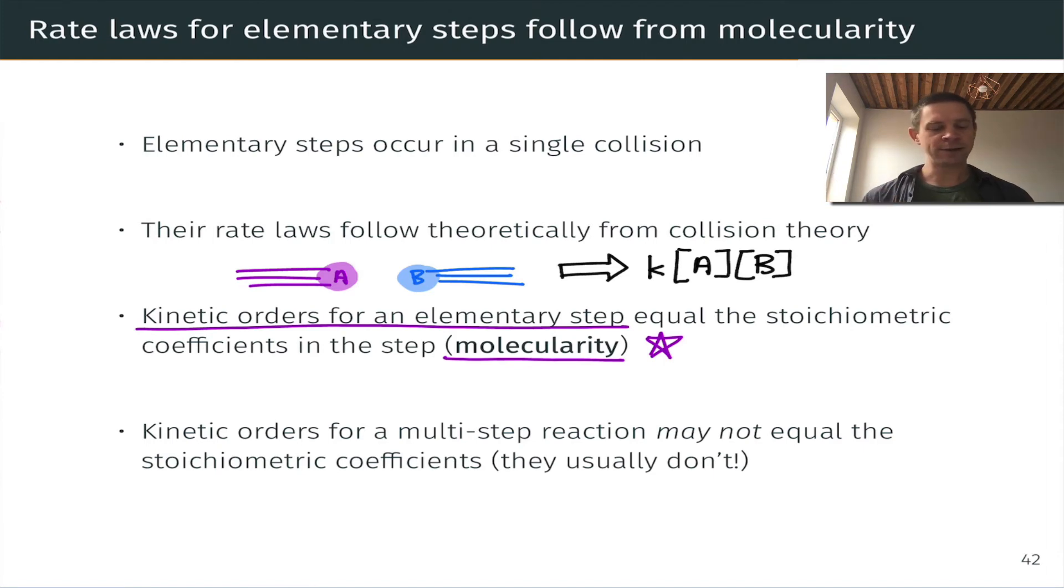The stoichiometric coefficients in the chemical equation for an elementary step are known as the molecularity of a species for that step. So for example, in the one we have here, the molecularity of A is 1 and the molecularity of B is 1, since we have one molecule each involved in the step.